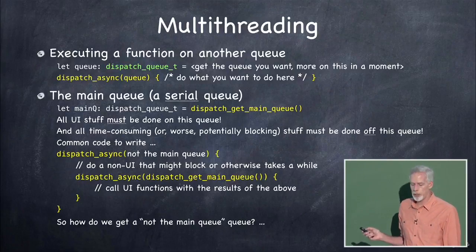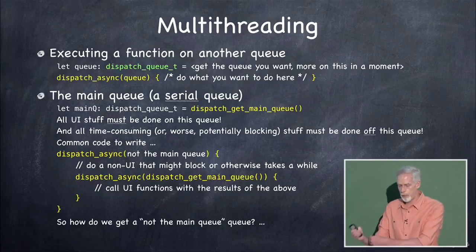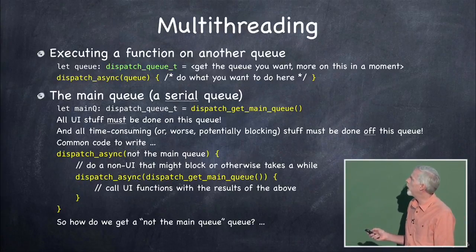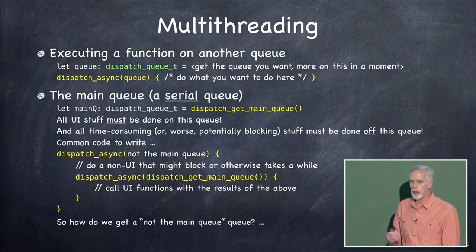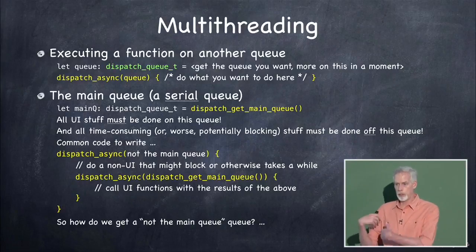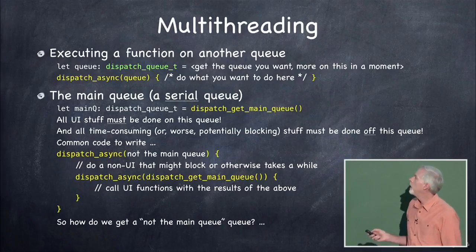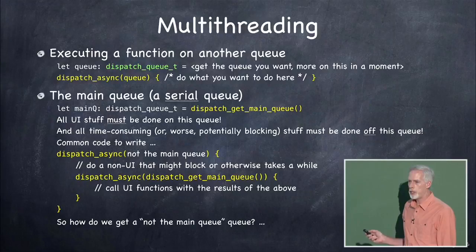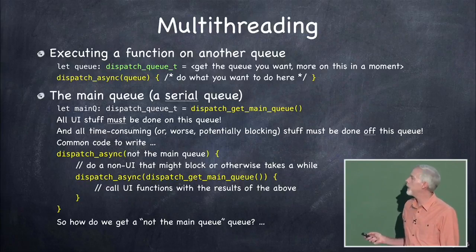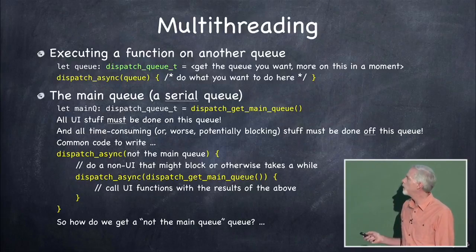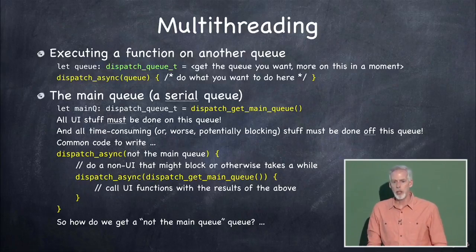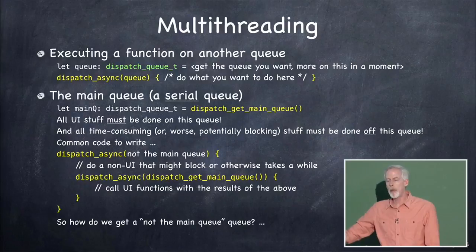All UI stuff has to be on the main queue — it's a serial queue, so nothing happens concurrently. But all time-consuming stuff, or stuff that might block — like going out to the network to get an image where you're waiting for the web server on the other side to respond — all that wants to happen off the main queue. You still dispatch to that queue using dispatchAsync. Inside the closure, you do the non-UI thing that takes a long time. Then, still inside the closure, you dispatch async again, this time back to the main queue to do the UI stuff — like putting the image you fetched into the UI.